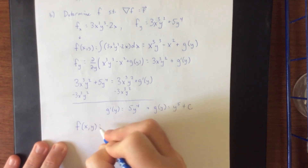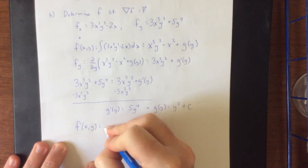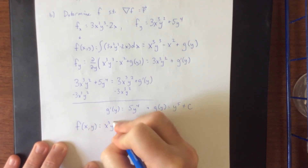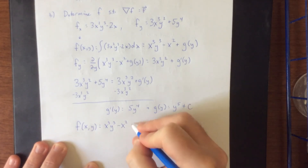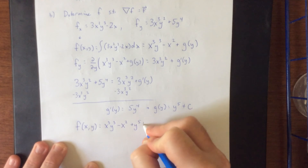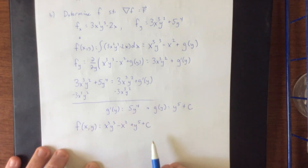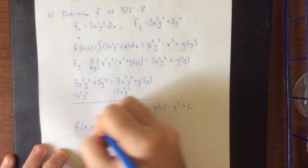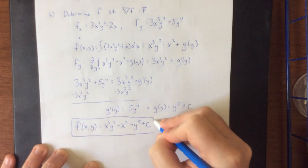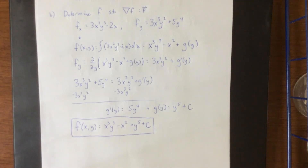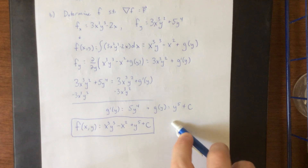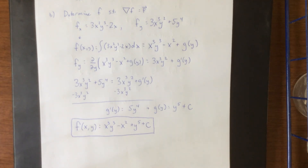So f(x,y) = x³y³ − x² + y⁵ + c. Now, whether or not you include the plus c is sort of dealer's choice. I like to include it, but there are situations where it's not necessarily appropriate. For those going on to differential equations after this course, this is a process you will see again for solving certain differential equations.